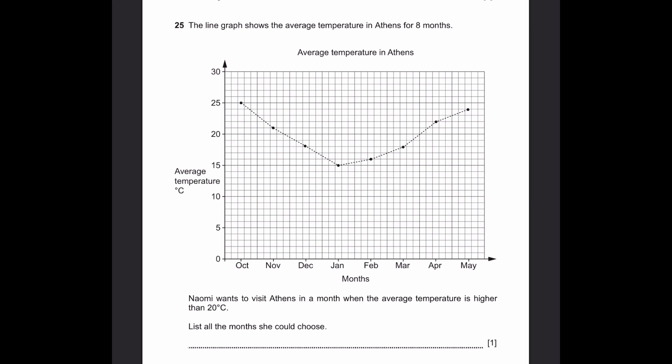Question 25. The line graph shows the average temperature in Athens for 8 months. Now we want to visit Athens in a month when the average temperature is higher than 20 degrees Celsius. List all the months you can choose. So I'll draw a line at 20 degrees Celsius. There we are. So there's 1, 2, 3, 4 months which are October, November, April, and May. So we just write down the names of the months. October. We can write in the short form also. November, April, May. That's the answer.